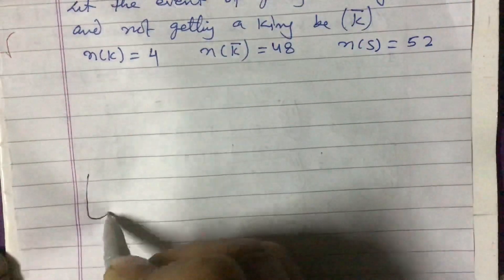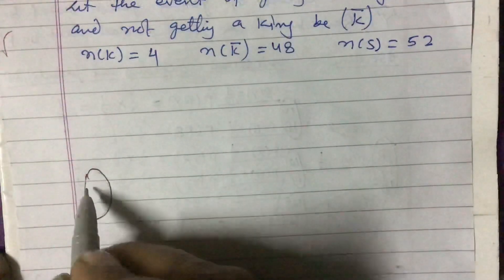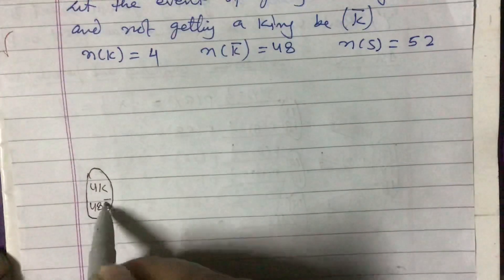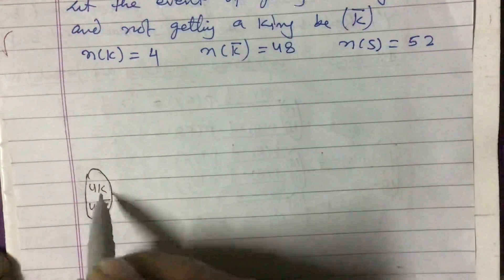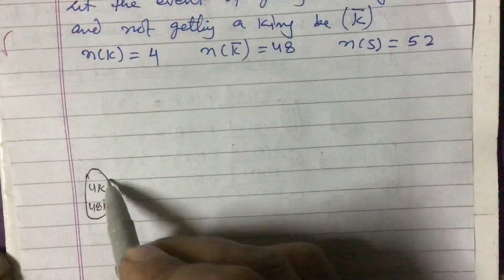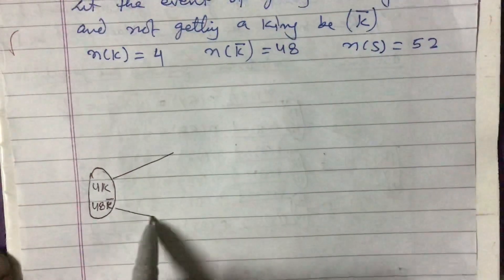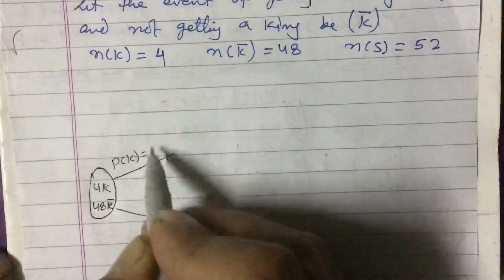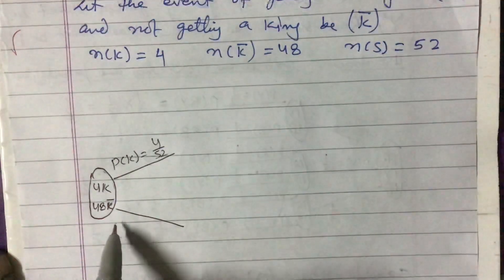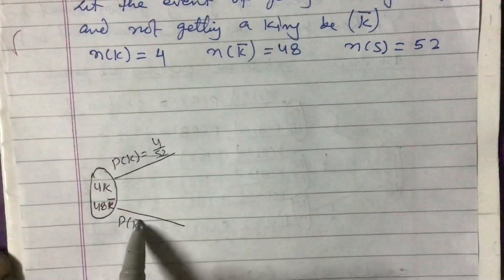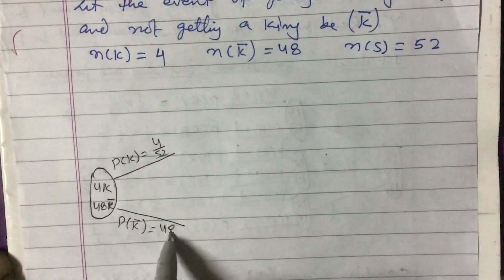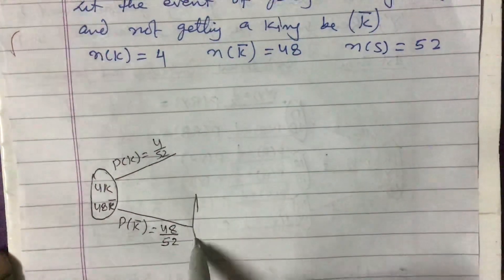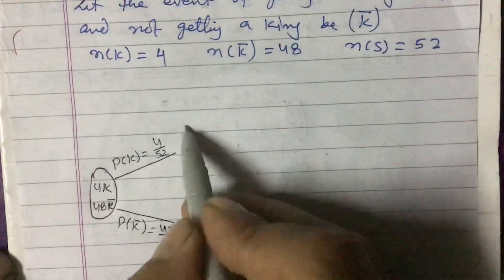Now let us draw the tree diagram. We make one oval shape where we write the number of kings and non-kings: 4 kings and 48 K-complement. Getting a king we show one branch, and not getting a king we show another branch. The probability of getting a king is K = 4/52, and the probability of not getting a king is K-complement = 48/52. Up to here there is no confusion — you can easily solve this.